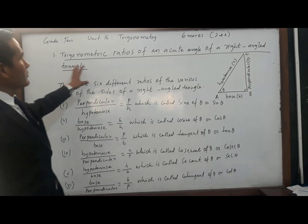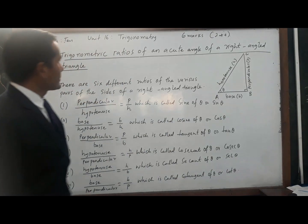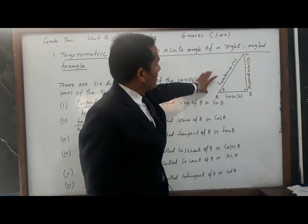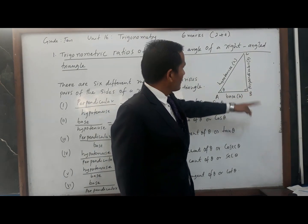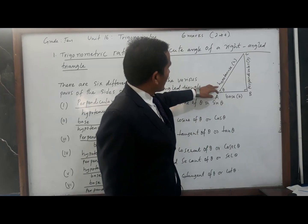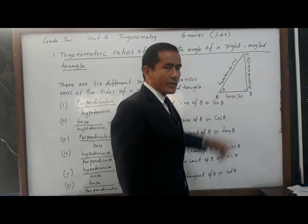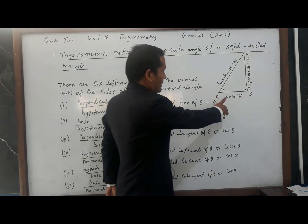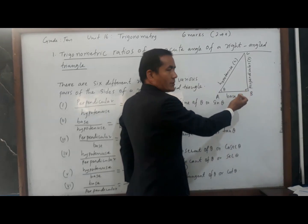Now I am going to teach you trigonometric ratios. I have taken a right angle triangle ABC. You can see here 90 degrees at B, and theta angle BAC is the acute angle which is taken as the reference angle.